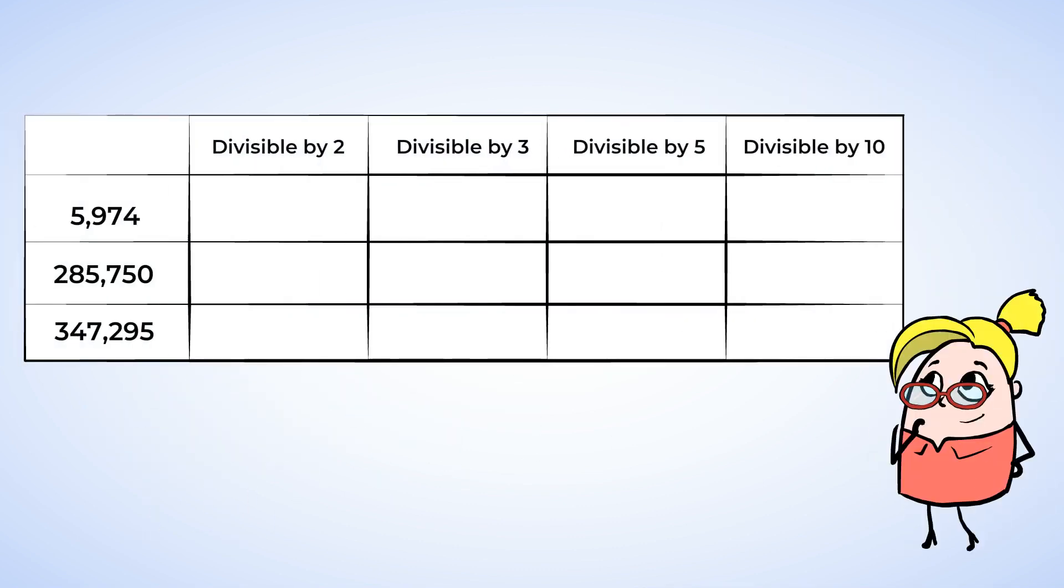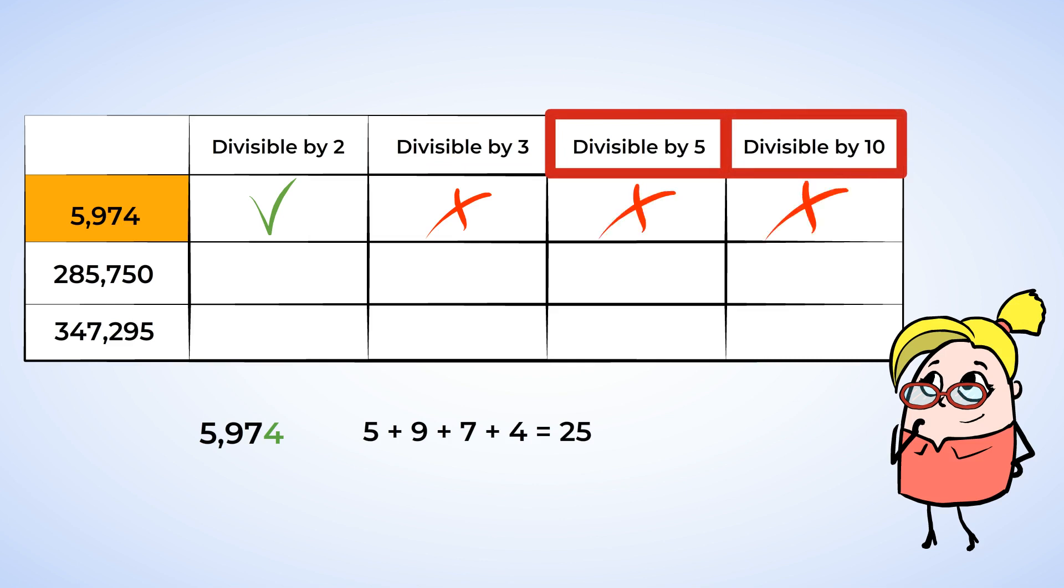But take a look at this table. Wow, these are some mighty numbers. But let's check to see if they are divisible by any of the numbers in the table together. Okay, 5,974 ends in 4. 4 is even, so it is divisible by 2. Let's mark it. Next, we can add the digits to see about divisibility of 3. We get a sum of 25. Well, that's not a multiple of 3, so it's not divisible by 3. And since it does not end in a 5 or a 0, it's not divisible by 5 or 10. So 5,974 is divisible only by 2.